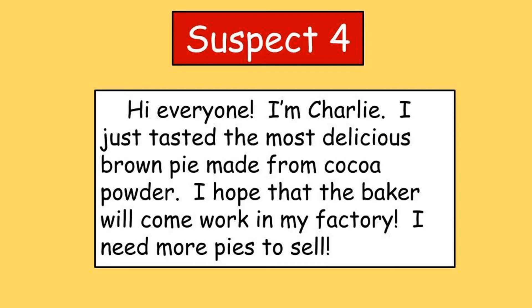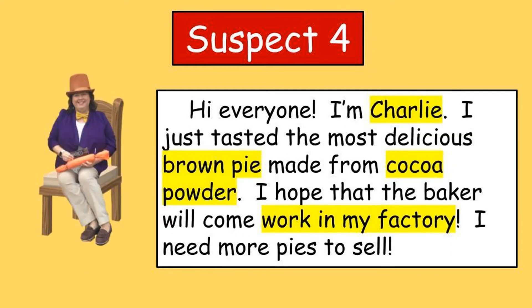Moving on to suspect number four. Hi everyone, I'm Charlie. I just tasted the most delicious brown pie made from cocoa powder. I hope that the baker will come work in my factory. I need more pies to sell. Do you think it could be suspect number four? No, it doesn't sound like suspect number four did it. That person is Charlie from Charlie and the Chocolate Factory. In the movie the character makes everything out of chocolate, so we have a brown pie made out of cocoa powder. There are no chocolate ingredients in pumpkin pie, so we're going to have to keep looking for another suspect.